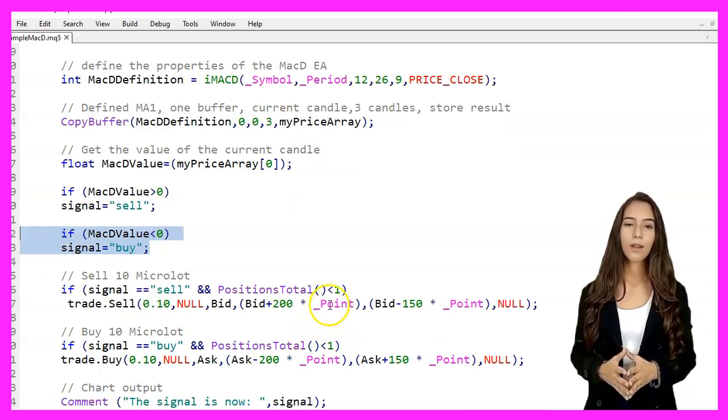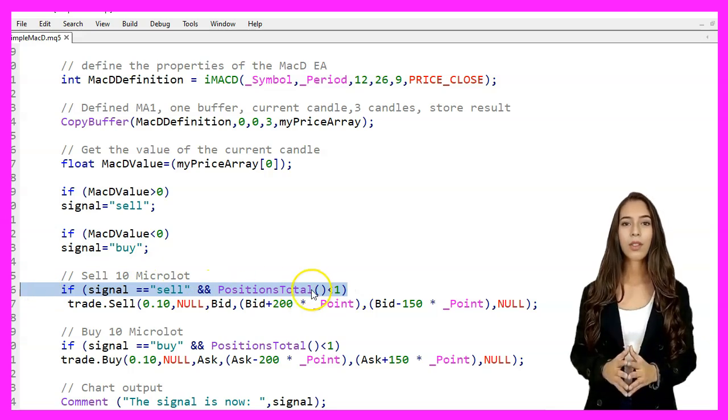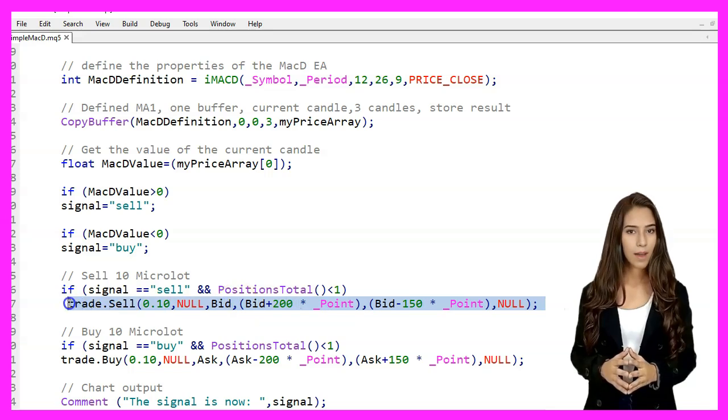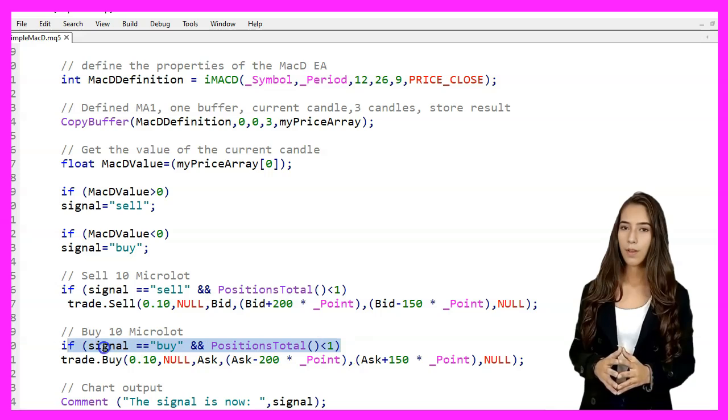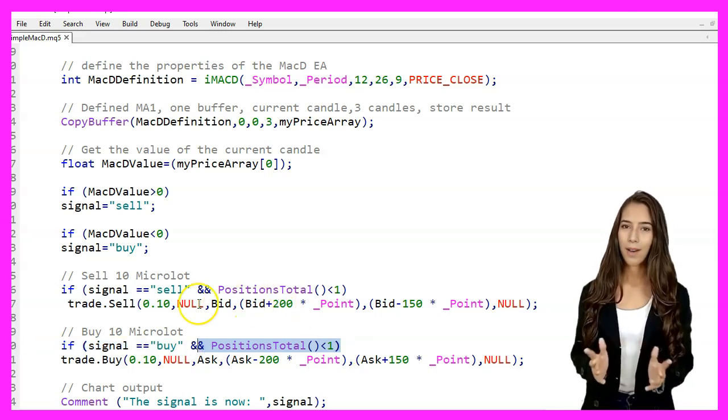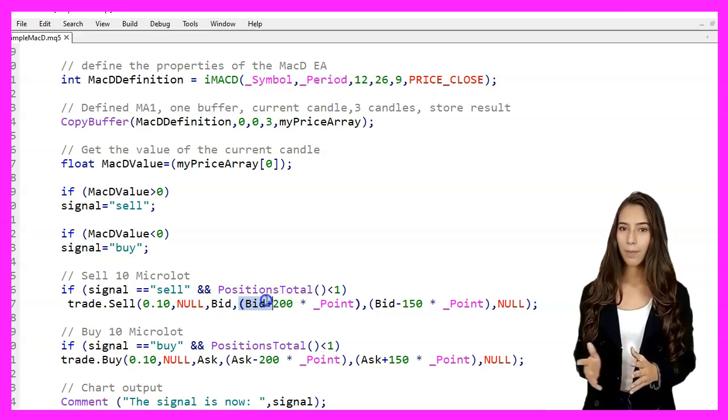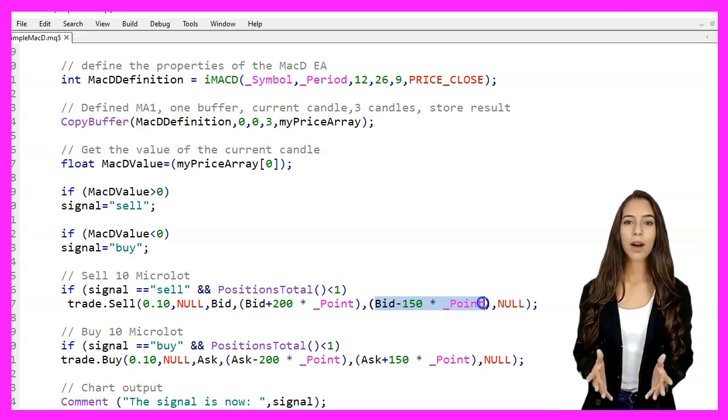For the Sell condition, if the signal is Sell and there are no open positions, positions total is less than 1, we execute a Sell trade of 10 microlots. We use the Trade.Sell function with the parameters Volume 0, Symbol, Null, Price, Bid, Stop Loss Bid plus 200 points, Take Profit, Bid 150 points, and Comment, Null.